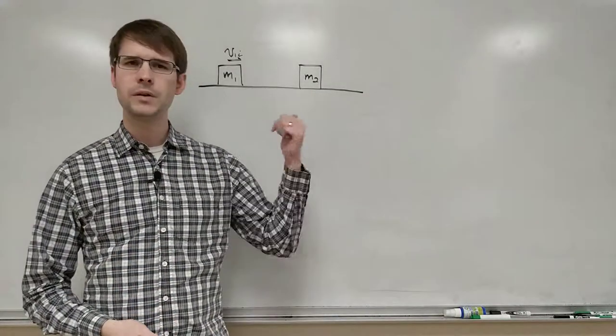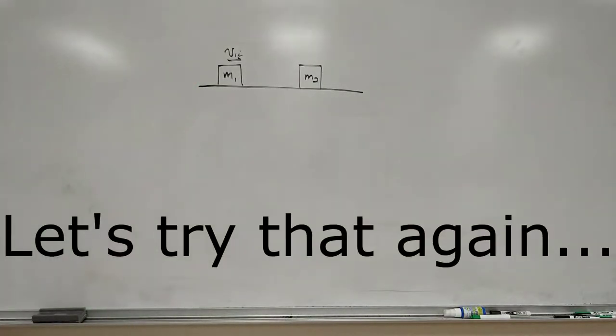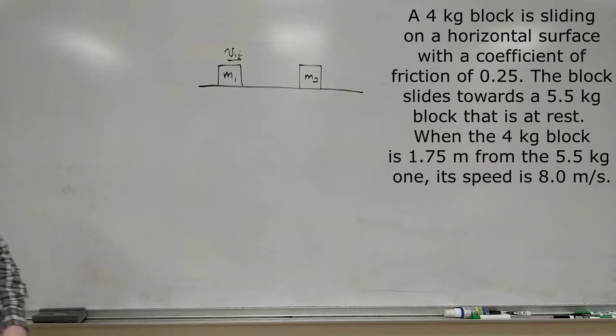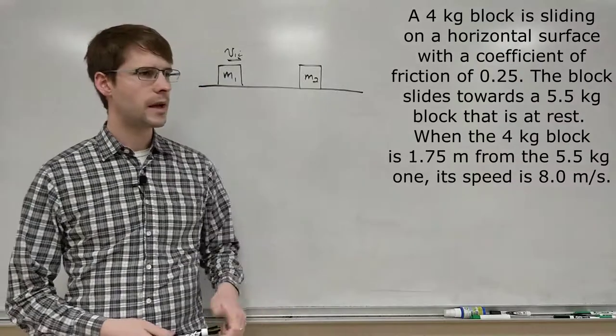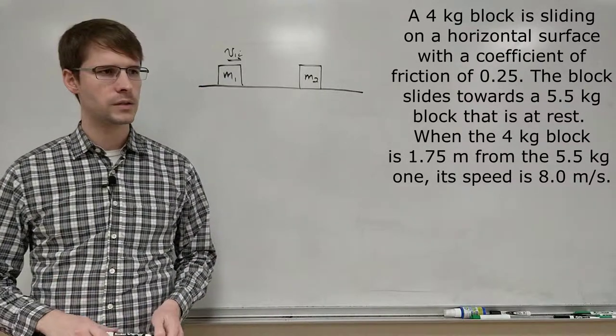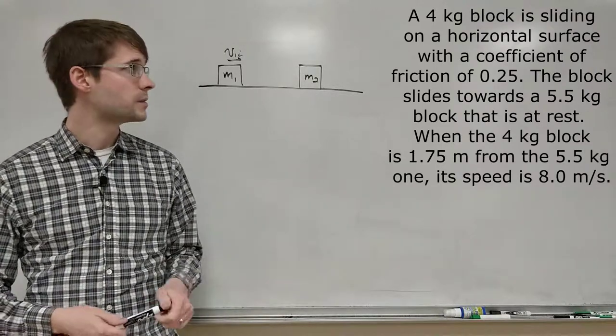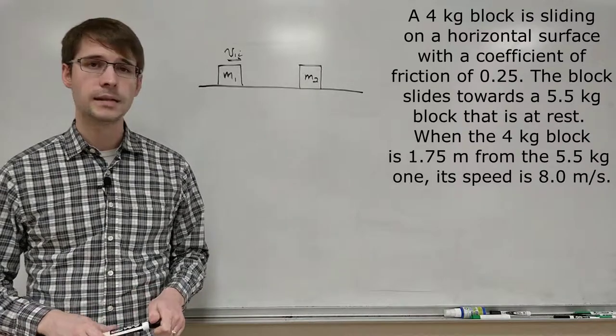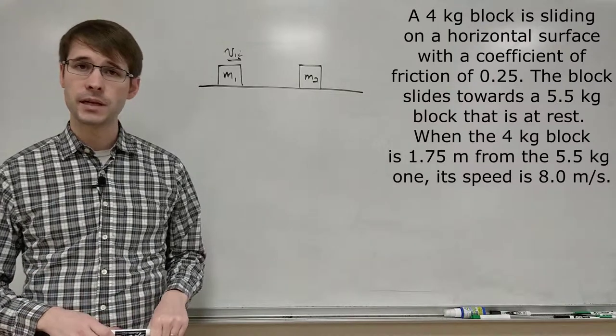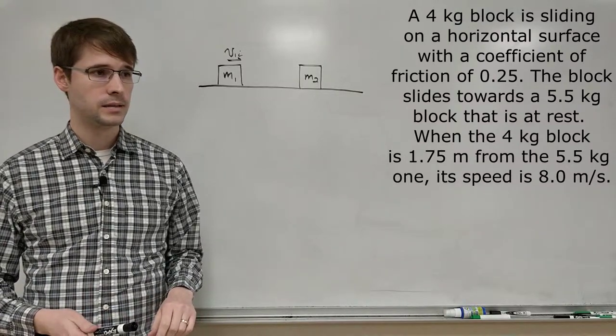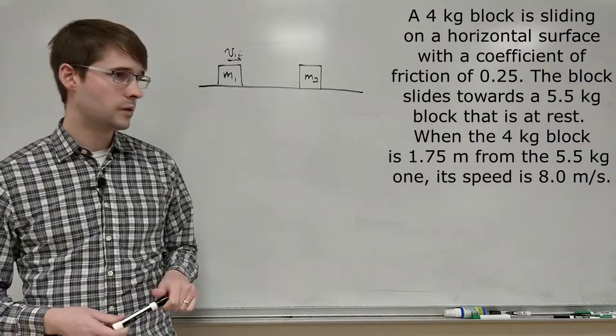Alright, so let's solve a problem. We've got here a 4 kilogram block sliding on a horizontal surface with a coefficient of friction of 0.25. The block slides towards a 5.5 kilogram block that is at rest. When the 4 kilogram block is 1.75 meters from the 5 kilogram one, its speed is 8.0 meters per second.